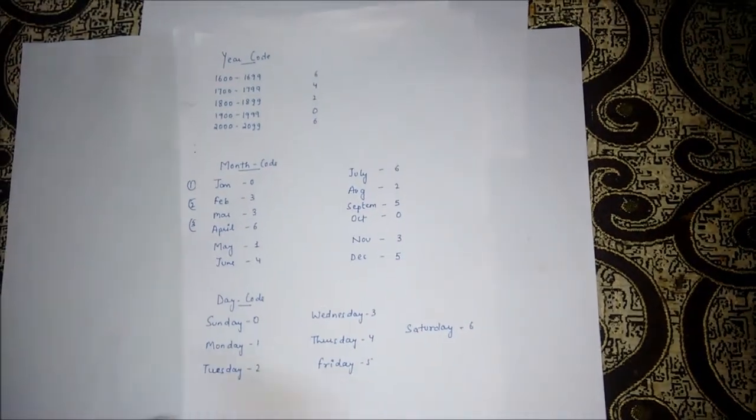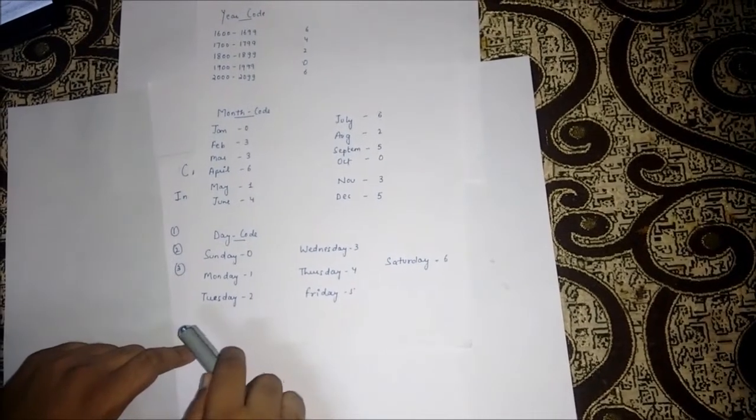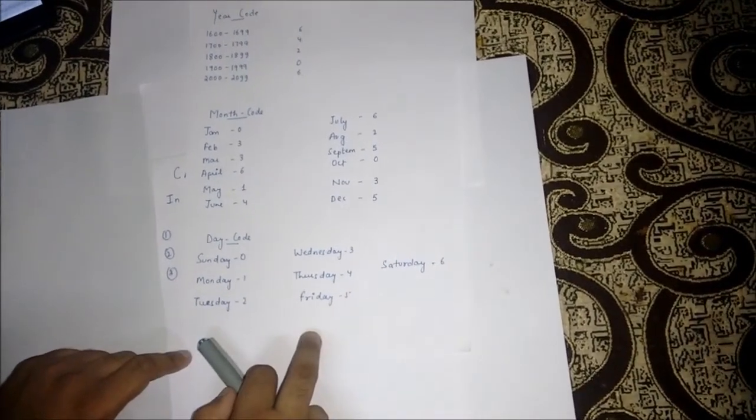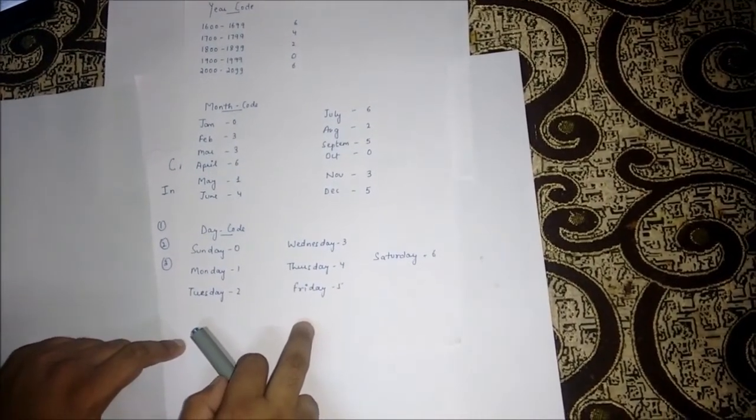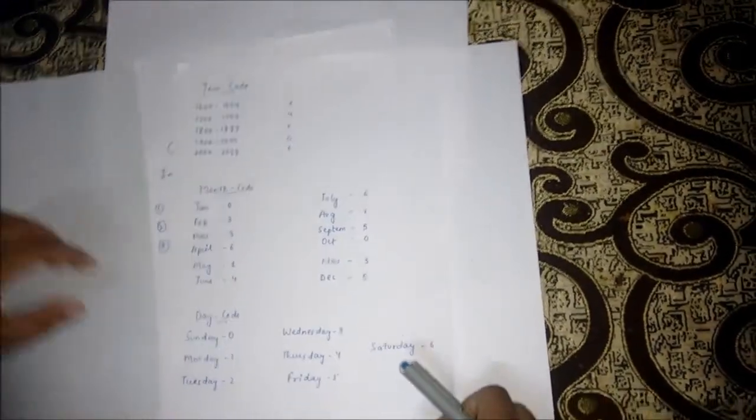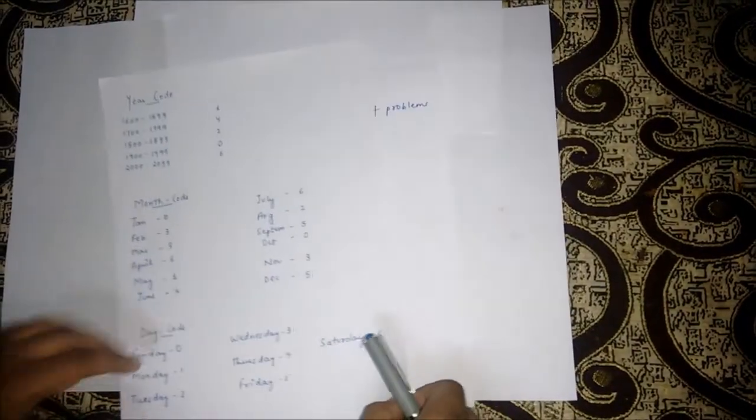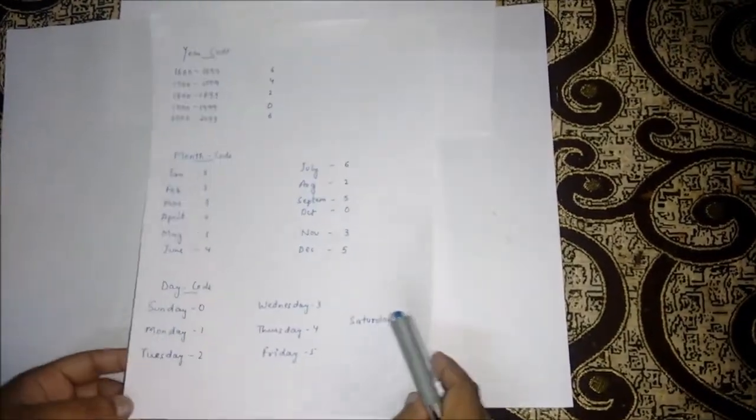Here we have day codes. Sunday is 0, Monday is 1, Tuesday is 2, Wednesday is 3, Thursday is 4, Friday is 5, and Saturday is 6. For solving the problem, you must remember these codes. Let's take an example of how to solve the problem.